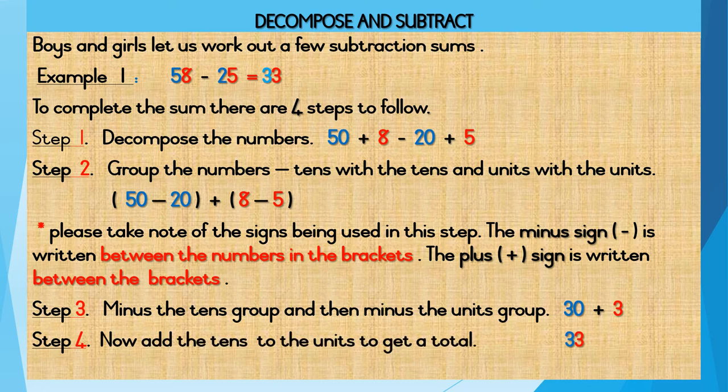Step 4: Now add the tens to the units to get a total. Your tens is 30 and your unit is 3. So 30 plus 3 is equal to 33. So your answer in step 4 is 33.